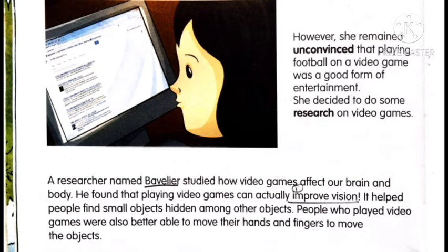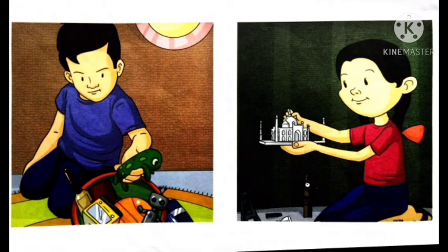So Bavilio is saying for — it is one opinion supporting video games. Improving vision: children will keenly observe the video games and they will be able to find things hidden somewhere — keen observation will improve. It also helps people find small objects hidden among other objects. And people who played video games were better able to move their hands and fingers because they use their fingers to move the remote very fast. So they can use their hands and fingers better to move objects.